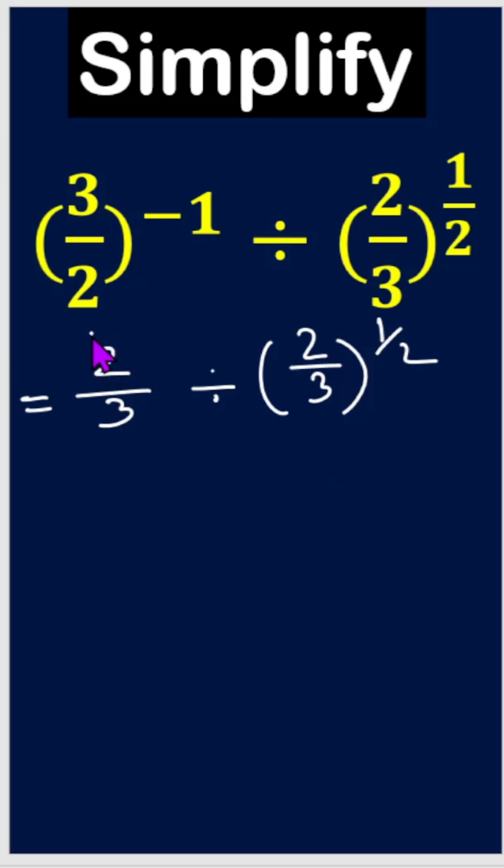Now look, this is 2 by 3 and here power is 1, and here is 2 by 3 power is 1 by 2 and we are dividing this one. We know when bases are the same in division, power will be subtracted.